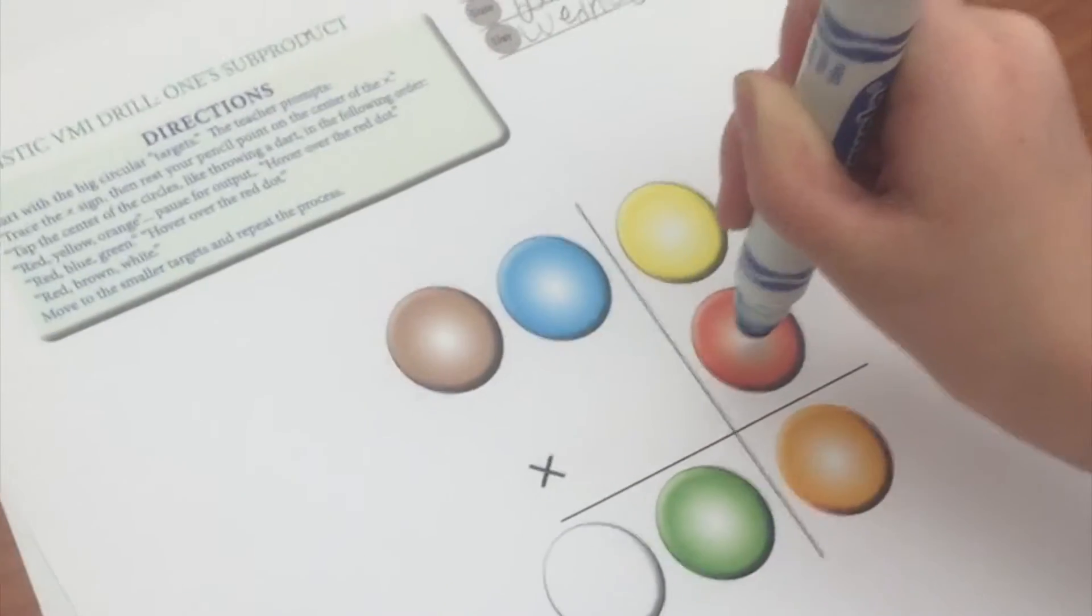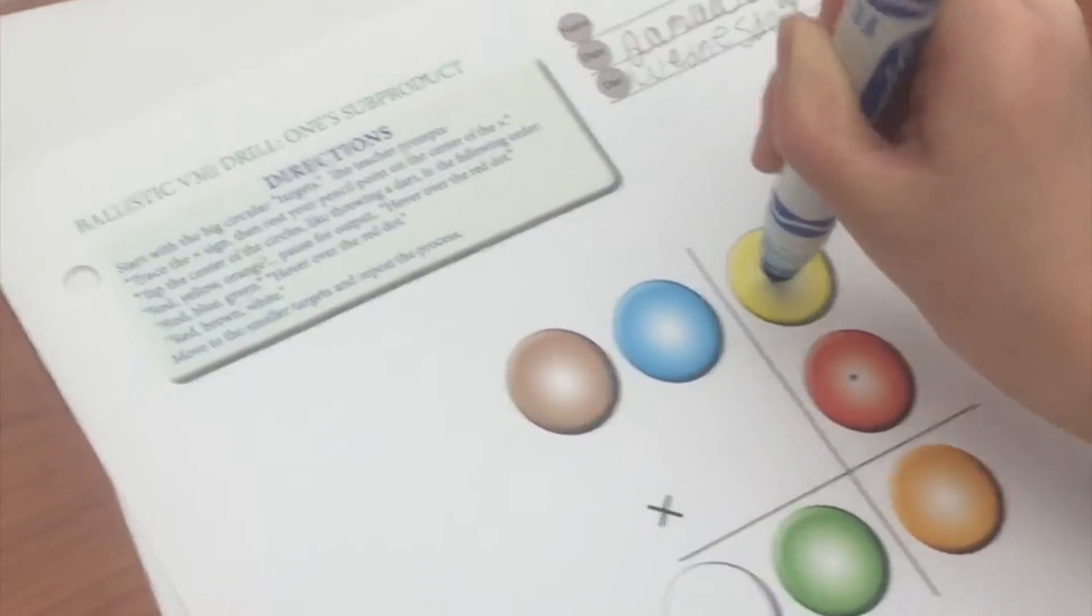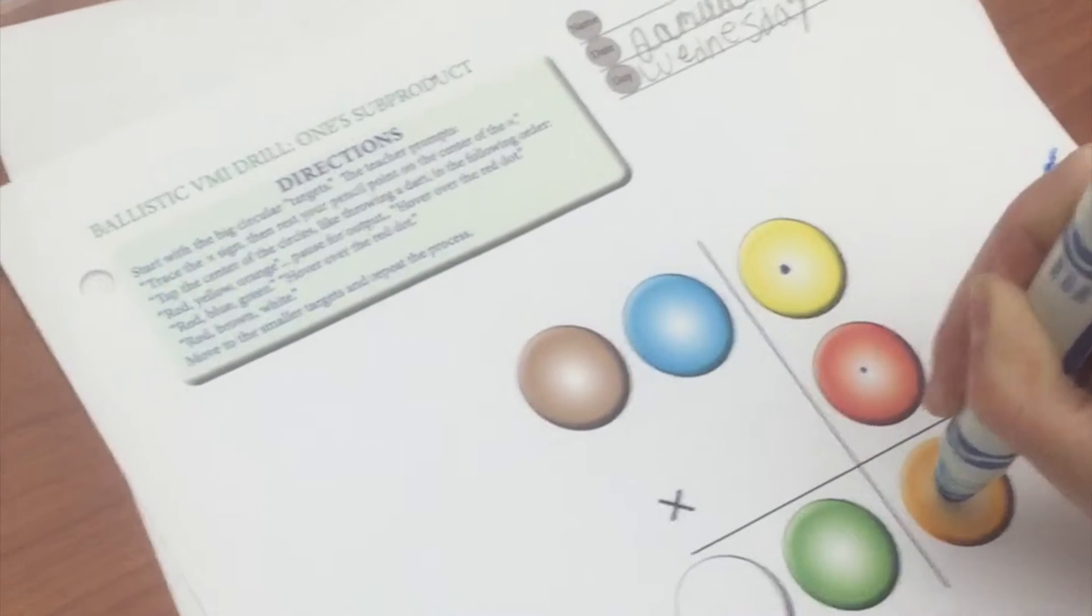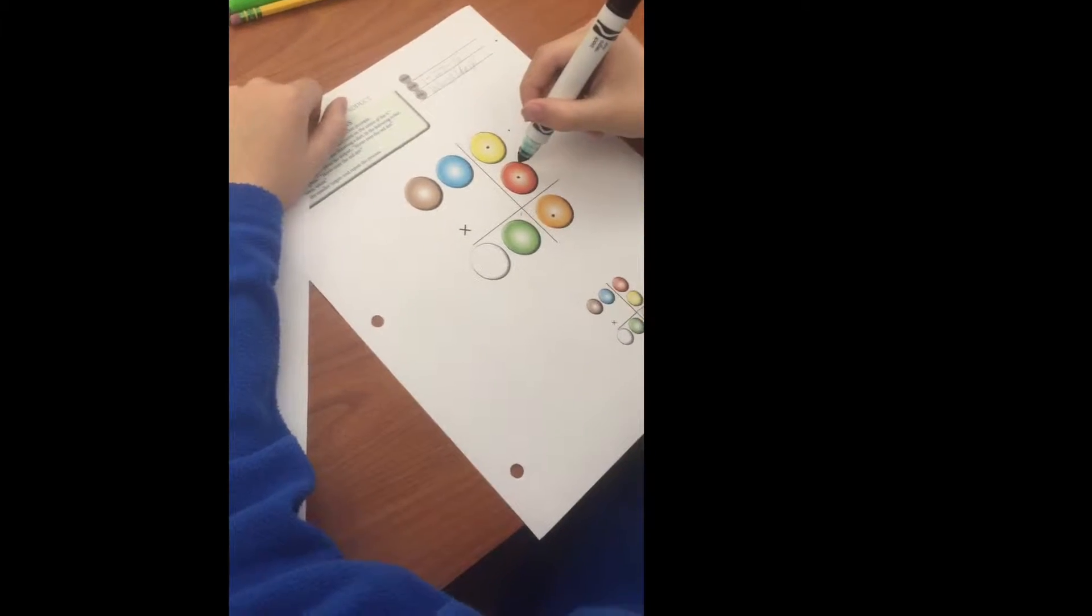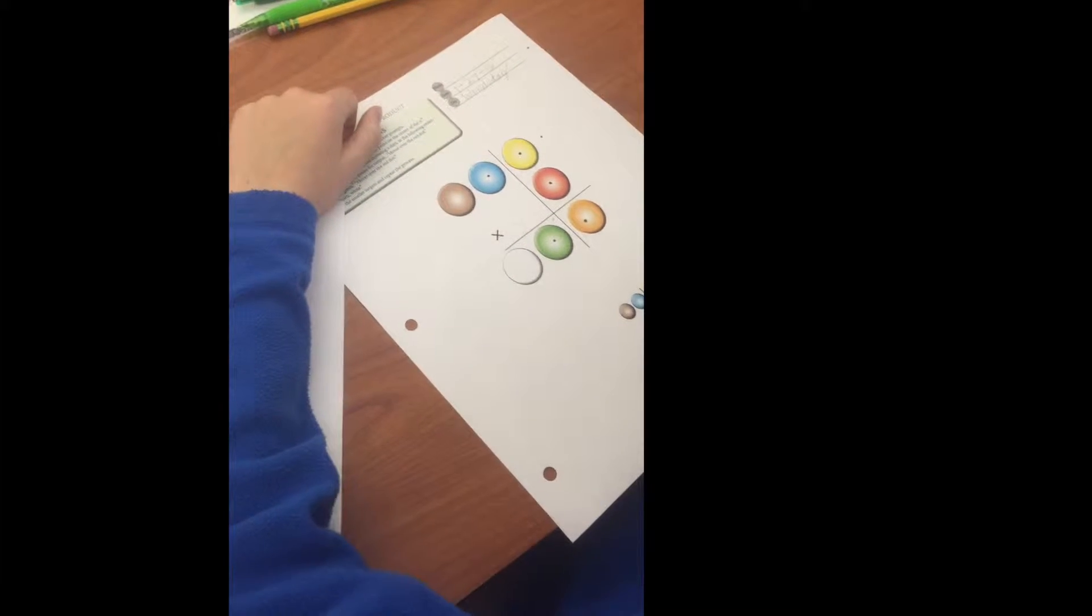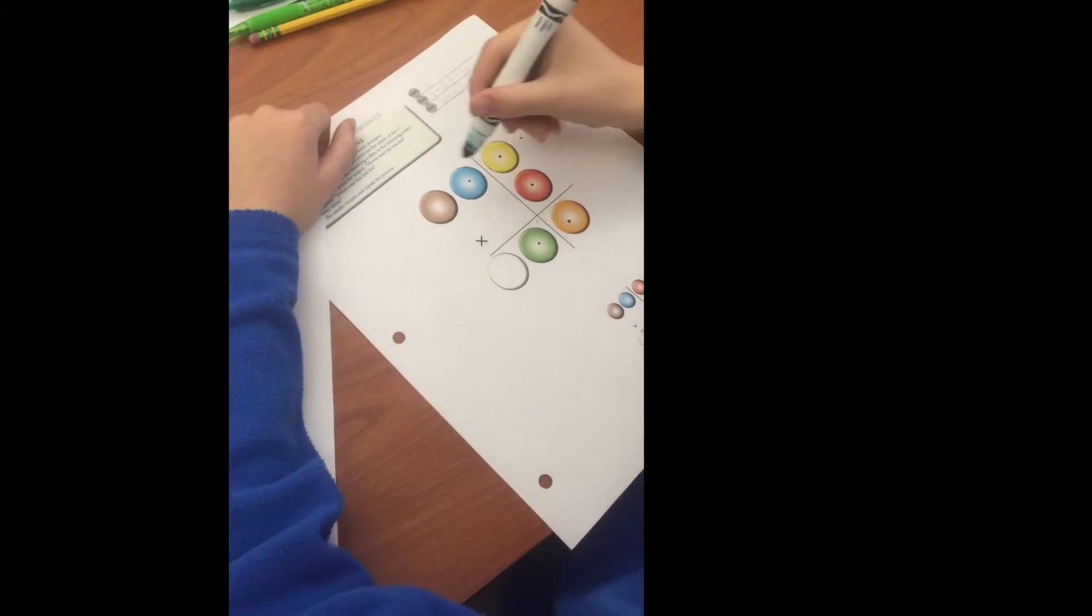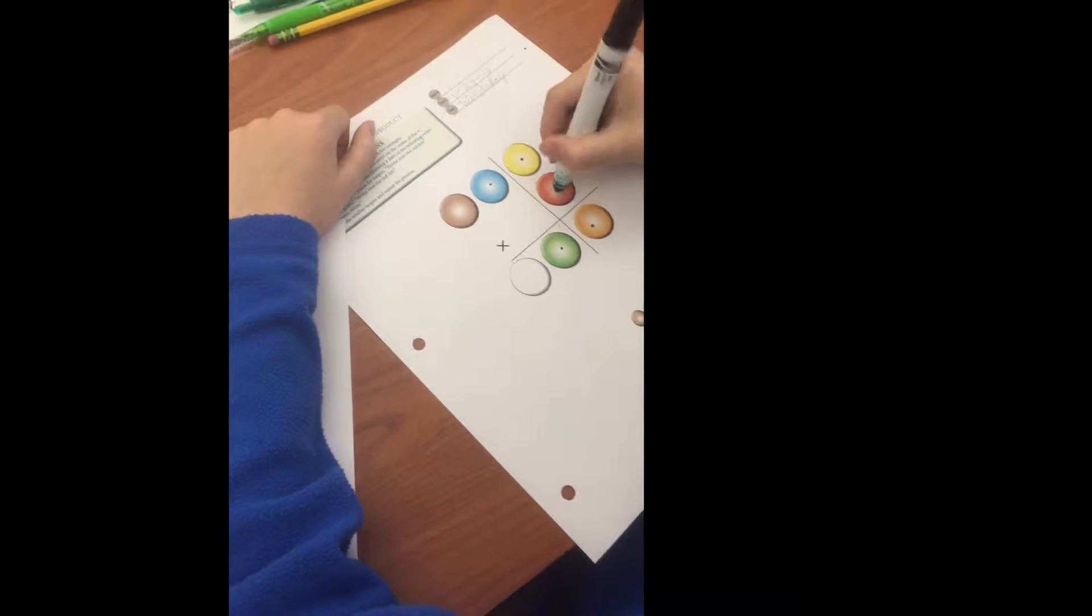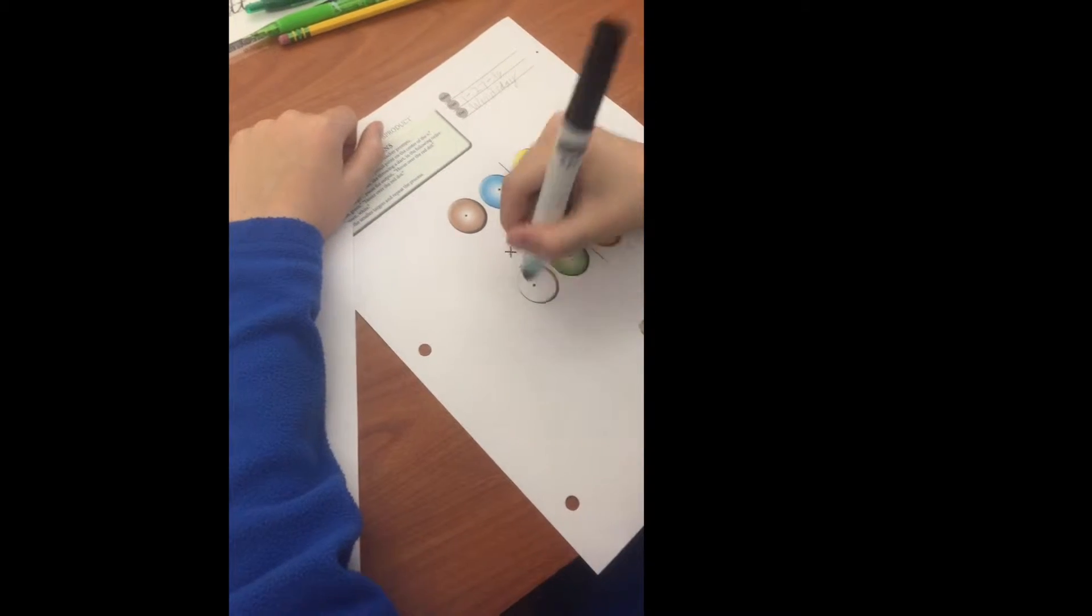Okay, red, yellow, orange, red, blue, green, good. Red, brown, white, nice.